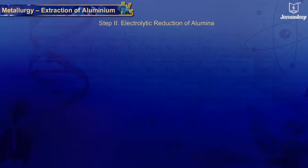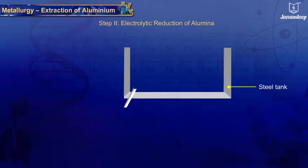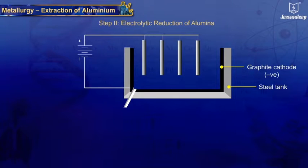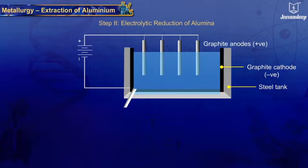Step 2 – Electrolytic reduction of alumina. This process is carried out in a steel tank which is lined with carbon graphite that acts as the cathode. Hanging inside is a set of carbon graphite rods that act as the anode, dipped in the molten electrolyte.